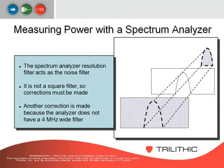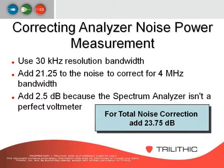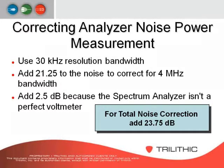Another correction is made because the analyzer does not have a 4 MHz wide filter. To correct analyzer noise power measurements, use a 30 kHz resolution bandwidth. Add 21.25 dB to correct for the 4 MHz bandwidth, then add 2.5 dB because the spectrum analyzer is not a perfect voltmeter. Your total noise correction is 23.75 dB.